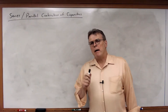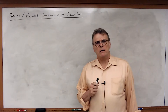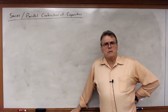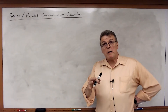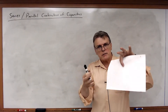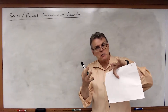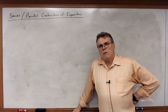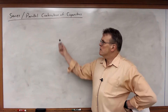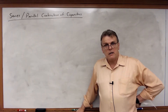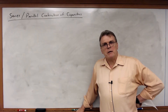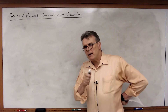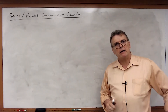Now let's look at how we can combine capacitors together — specifically series and parallel combinations. We saw before how we could take series and parallel combinations of resistors and distill those down to a single resistor. Does it also work for capacitors? Yes it does — we can reduce a network of capacitors to a single capacitor. But does it work the same way as resistors? Let's do the math and find out.